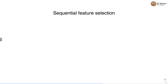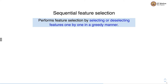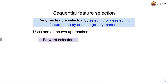Let's study Sequential Feature Selection as the next wrapper-based feature selection method. It performs feature selection by selecting or deselecting one feature at a time in a greedy manner. There are two approaches: forward selection and backward selection. Forward selection starts with 0 features and goes on adding one feature at a time until the desired number of features are obtained, whereas in backward selection we start with all features and go on deselecting features one by one until the desired number are obtained.